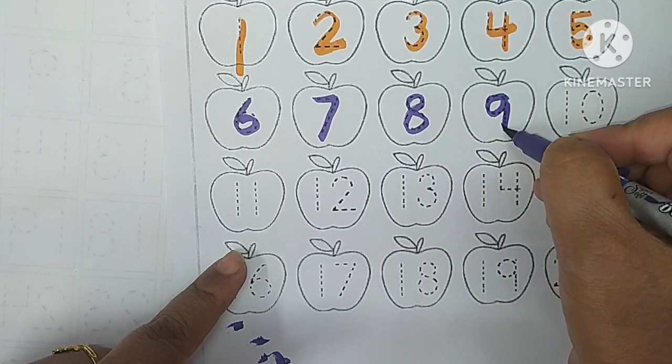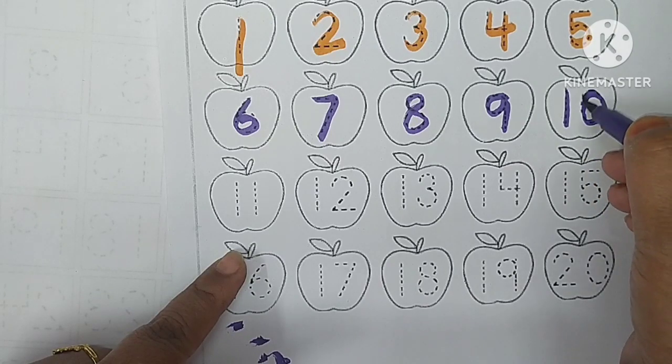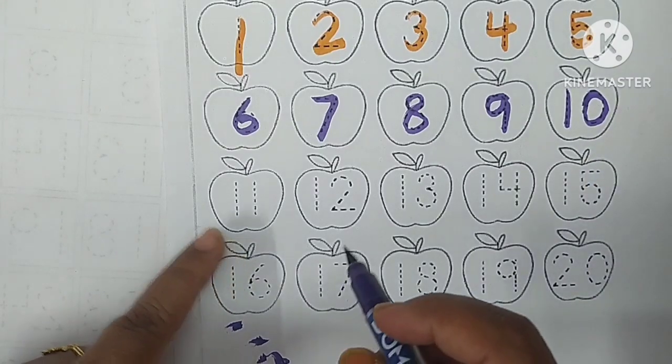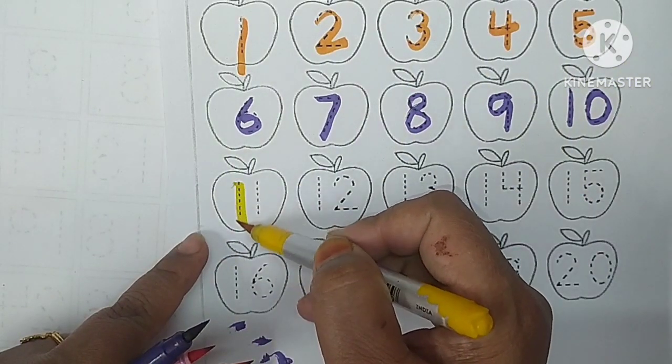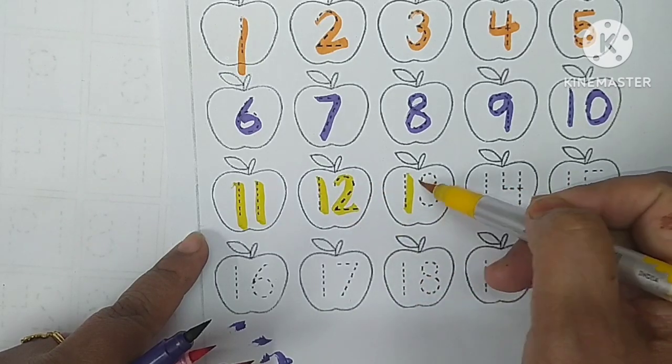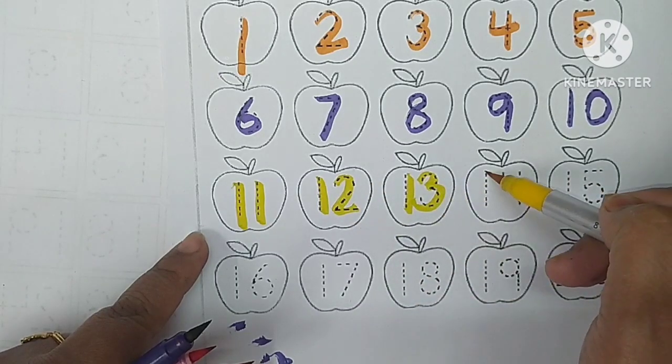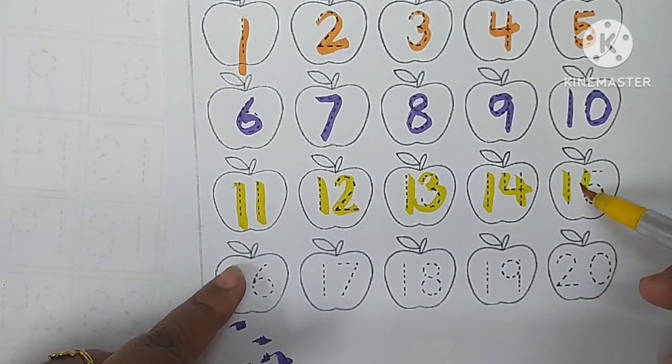One zero, ten. One zero, ten. Three and ten. One one, eleven. One two, twelve. One three, thirteen. One four, fourteen. One five, fifteen.